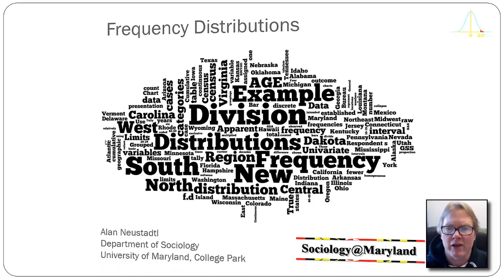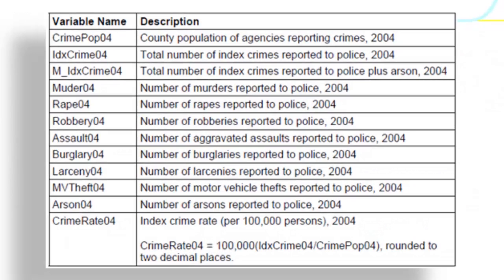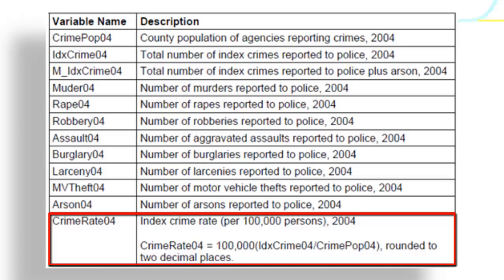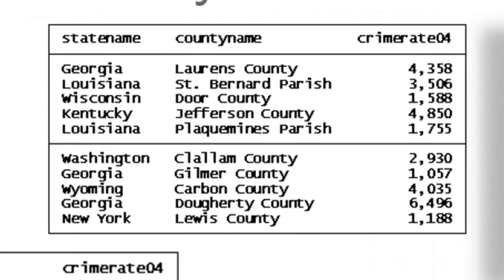The first example we're going to look at examines crime rate. The FBI collects a number of crime statistics — different kinds of crimes like murder, rape, robbery, assault, burglary, larceny, motor vehicle theft, and arson. Those are called index crimes, and from that they develop an index crime statistic. We're going to take the index crime statistic and calculate it as a rate — the number of crimes per 100,000 people. For example, in Lawrence County, Georgia, there were 4,358 index crimes for every 100,000 people. The per 100,000 standardizes the data so we can compare crime rates among counties regardless of population size.